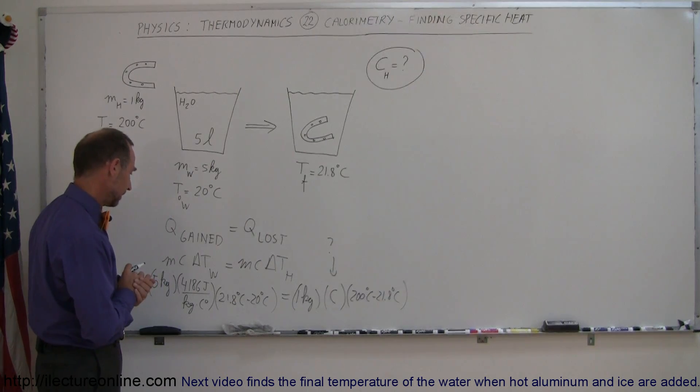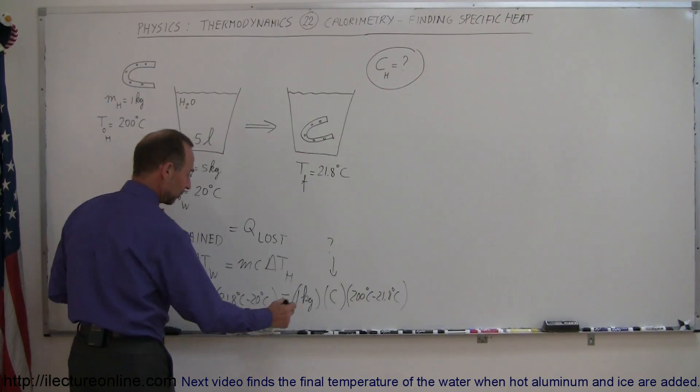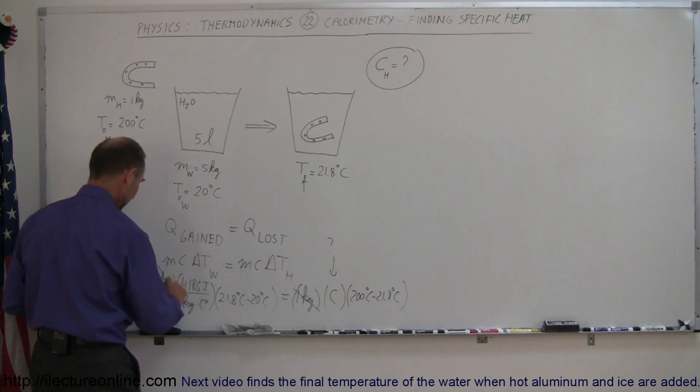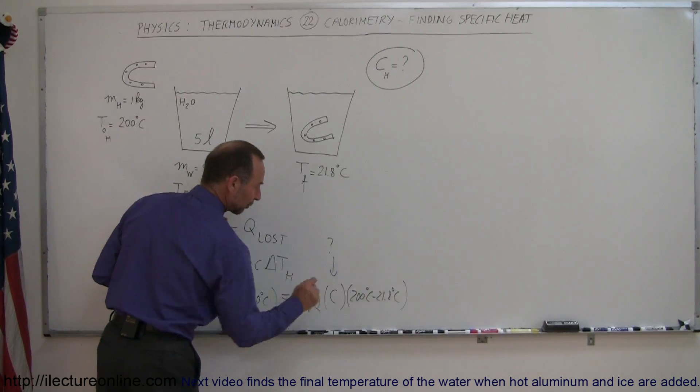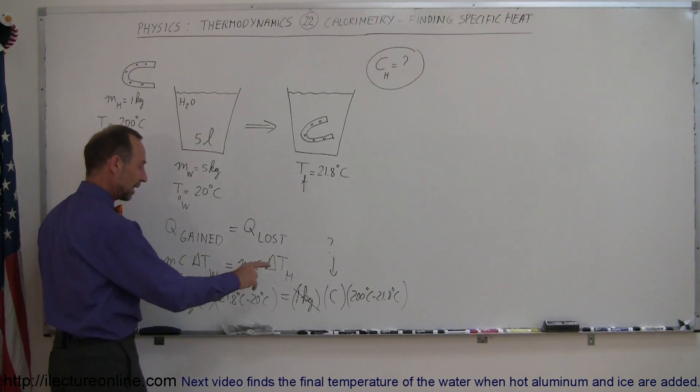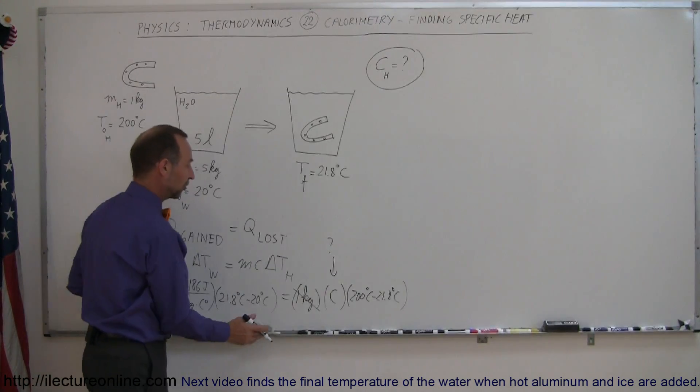Let's say that now we want to solve this for C. The 1 kilogram divided by 5 kilograms, so I can get rid of the 1 kilogram here and get rid of the kilograms over there. And I'm going to divide both sides by the difference in the temperature for the horseshoe, put that over here, and then we'll end up with C. So now let's go over here and solve this equation for C.